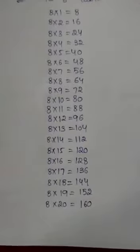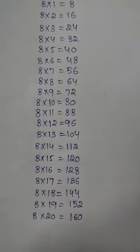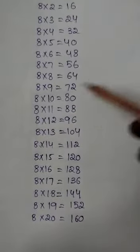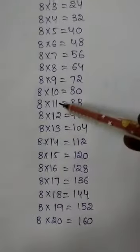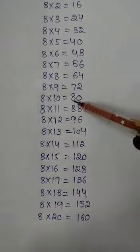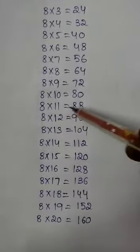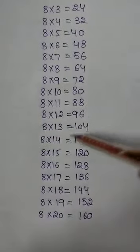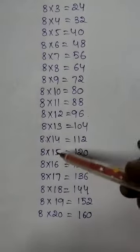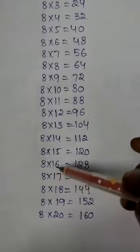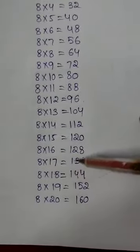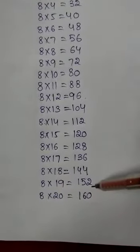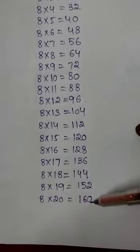Second time, 20 steps: 8 10s are 80, 8 11s are 88, 8 12s are 96, 8 13s are 104, 8 14s are 112, 8 15s are 120, 8 16s are 128, 8 17s are 136, 8 18s are 144, 8 19s are 152, 8 20s are 160.